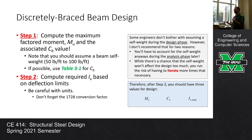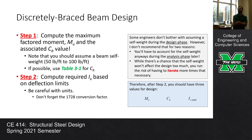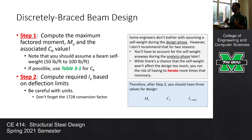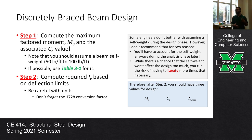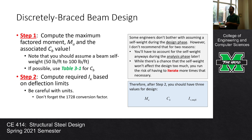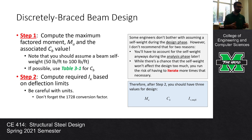In step one, we compute the maximum factored moment but we also have to find the associated CB value. Just like before, we have to assume a beam self-weight - we can assume anything between 50 to 100 pounds per foot, which are pretty reasonable assumptions for building members. We also need a CB value. If possible, use Table 3-1 because it lists CB values for general situations. If you've got really unusual loading, you have to compute it.